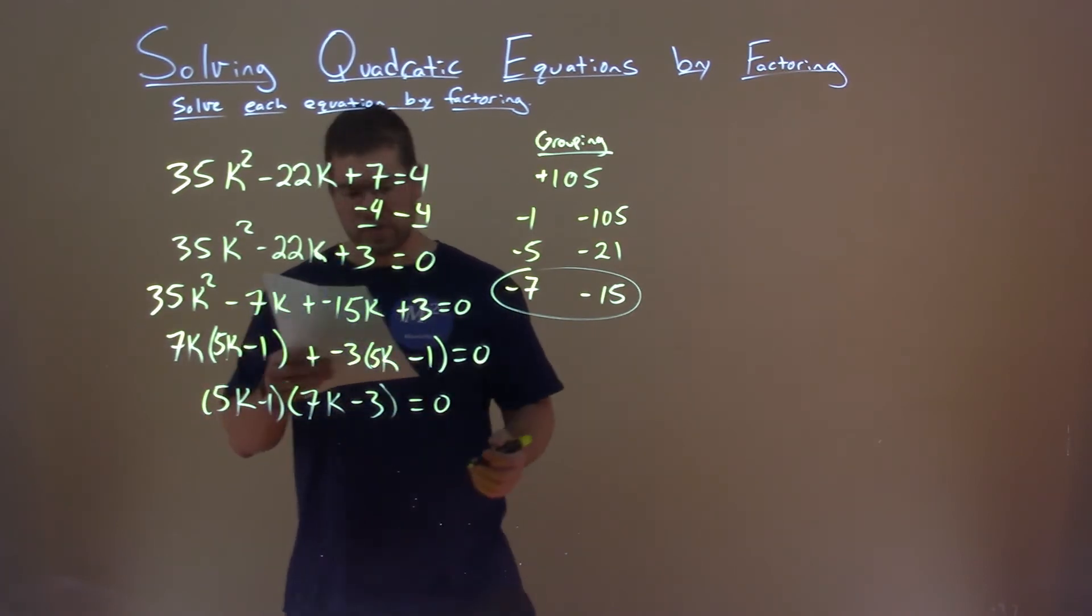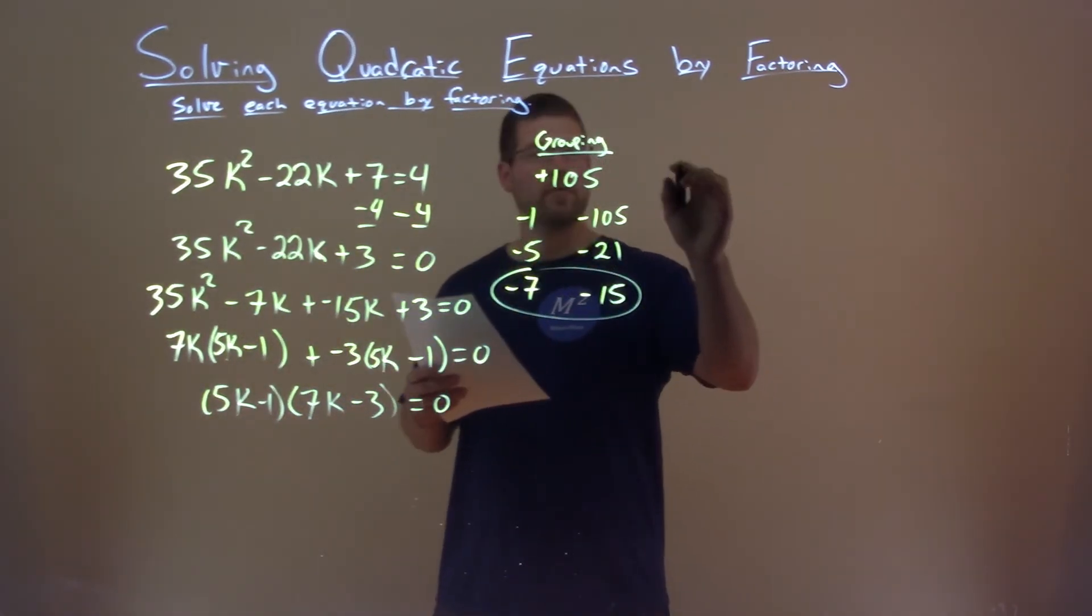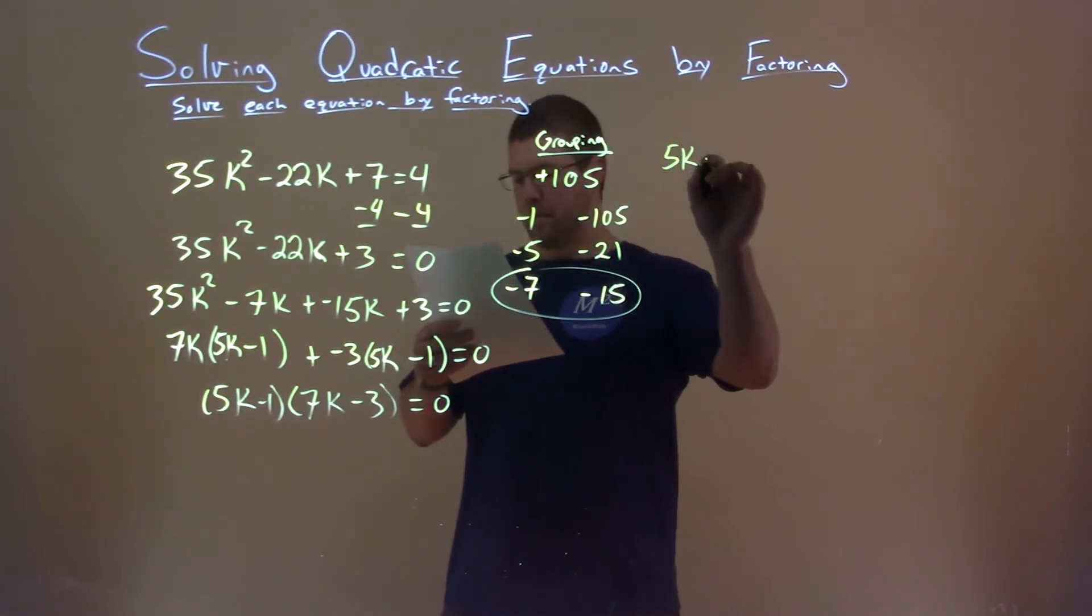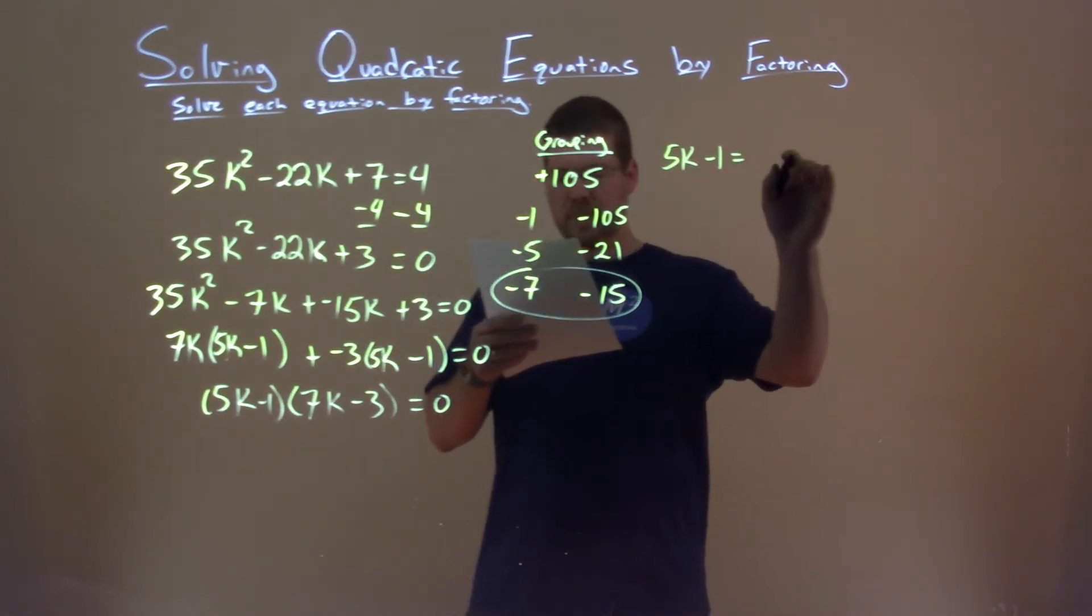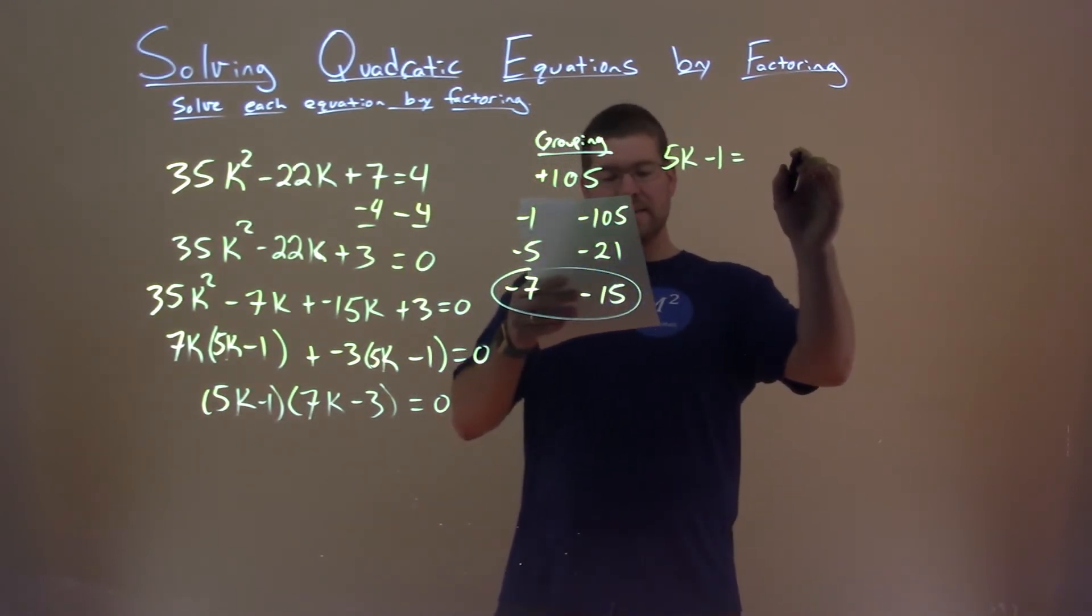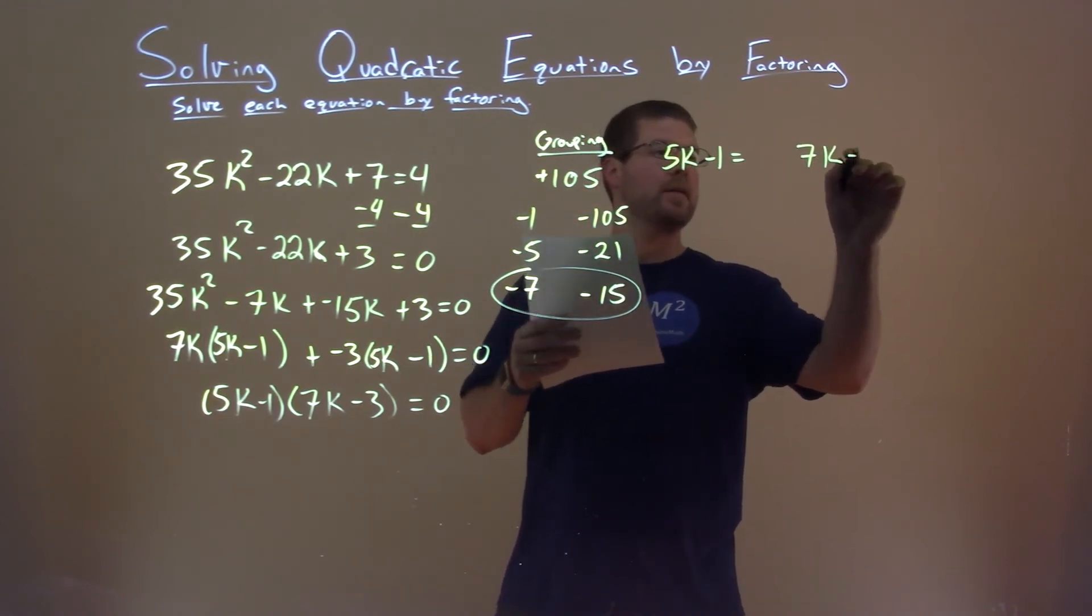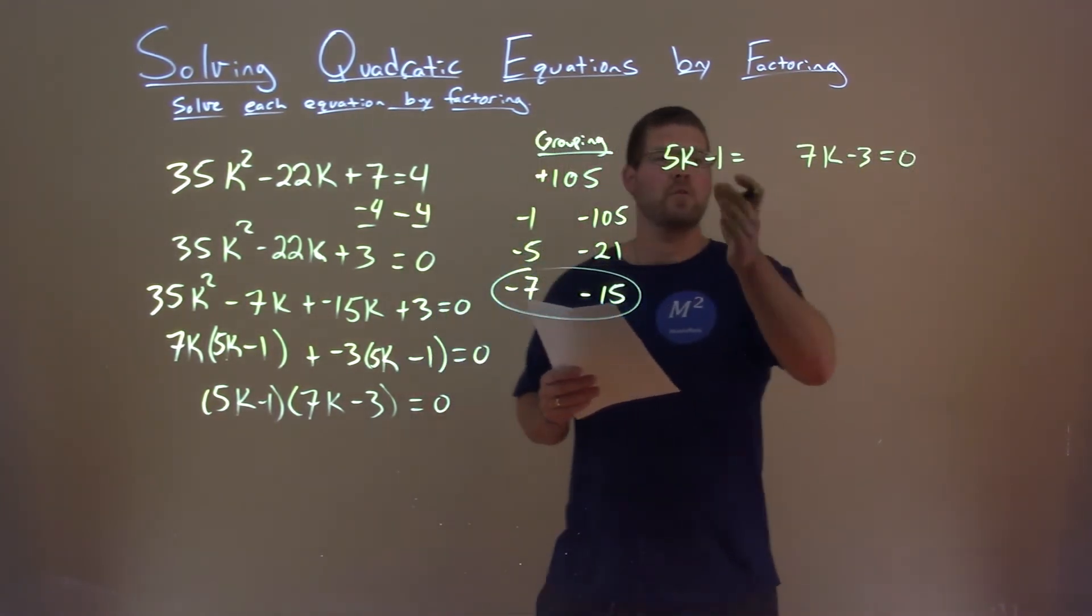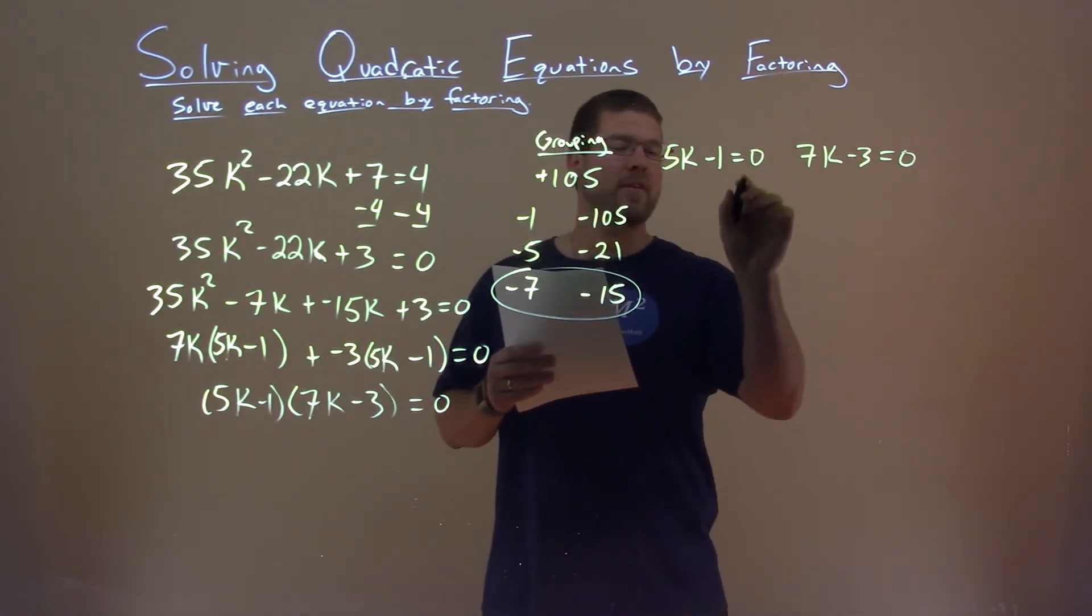So we can set each part individually equal to 0. So we do the first part here: 5k minus 1 equals 0, and 7k minus 3 equals 0, and we're going to solve for k on both of them.